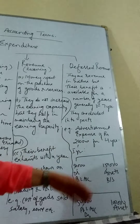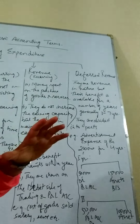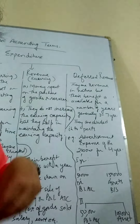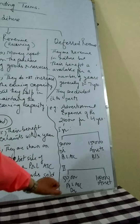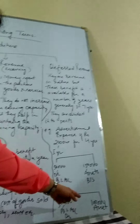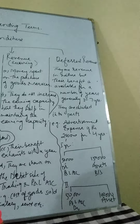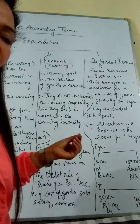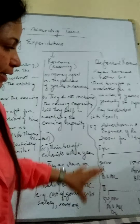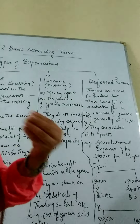The remaining 1,50,000, which has still not been used, will be shown as an asset in the balance sheet in the first year. In the second year, again 50,000 will be shown on the debit side of the P&L account as revenue expense, and 1 lakh will be shown as an asset on the balance sheet. In the third year, again 50,000 on the debit side of P&L and remaining 50,000 on the balance sheet. In the last year, only the debit side of P&L is shown and nothing as an asset.